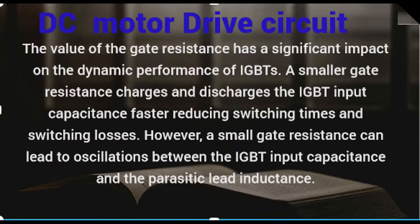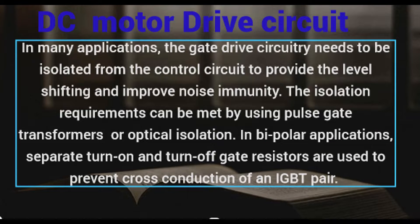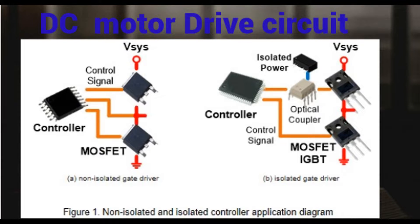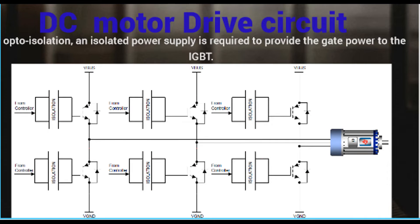The value of the gate resistance has a significant impact on the dynamic performance of IGBTs. A smaller gate resistance charges and discharges the IGBT input capacitance faster, reducing switching times and switching losses. However, a small gate resistance can lead to oscillations between the IGBT input capacitance and the parasitic lead inductance. Within many applications, the gate-drive circuitry needs to be isolated from the control circuit to provide level-shifting and improve noise immunity. The isolation requirements can be met by using pulse-gate transformers or optical isolation. In bipolar applications, separate turn-on and turn-off gate resistors are used to prevent cross-conduction of an IGBT pair. Opto-isolation with an isolated power supply is required to provide the gate power to the IGBT.